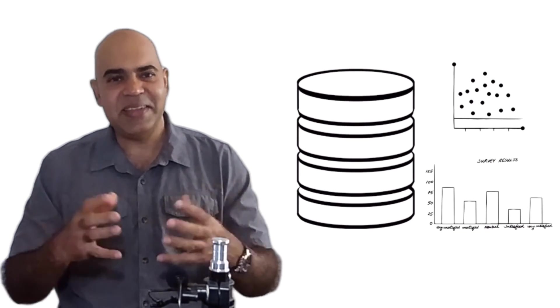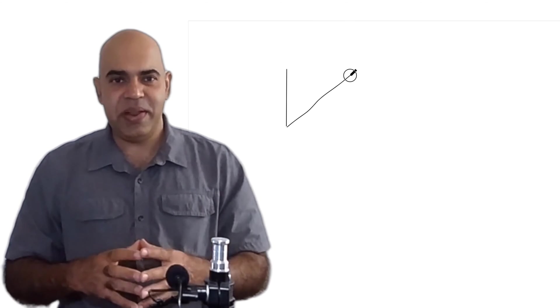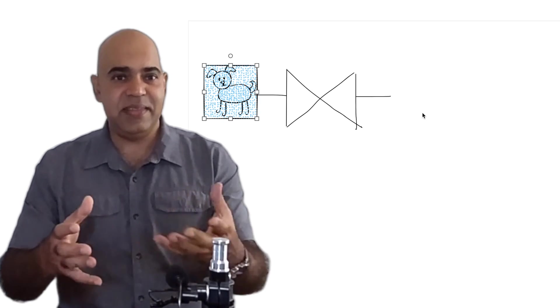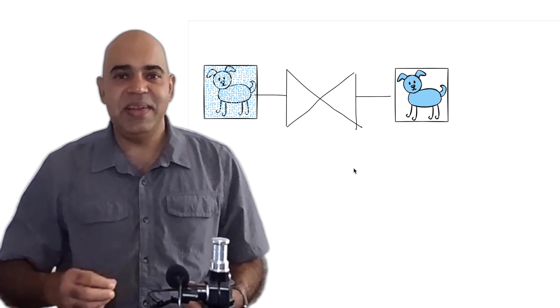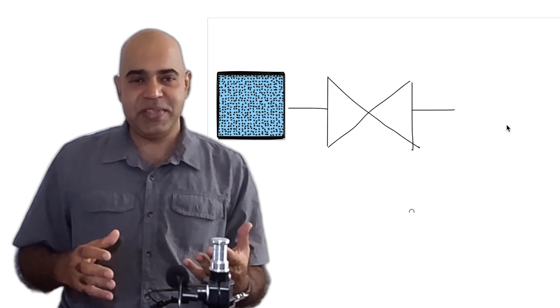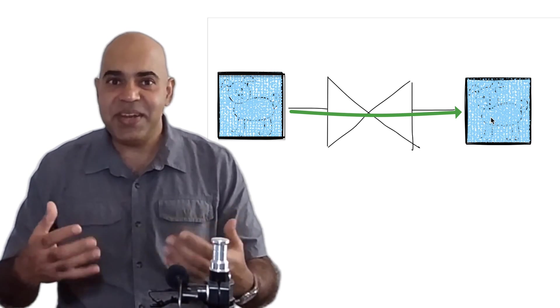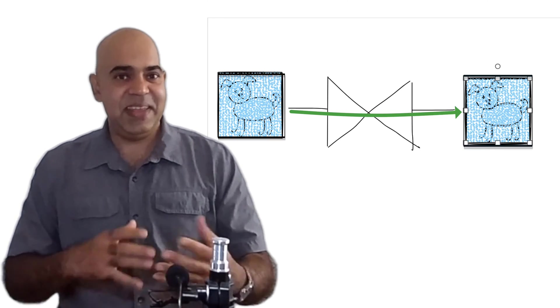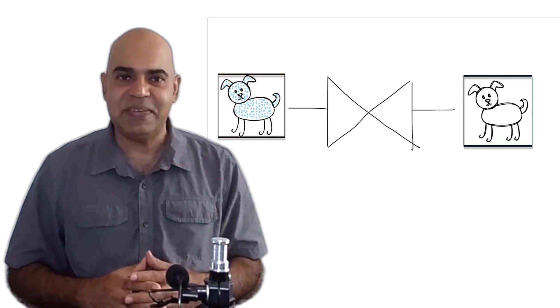The central idea behind diffusion models is the concept of a random walk through the data space. Starting from a noise sample, we train a neural network that, given noisy data in the input, can provide denoised data in the output. In other words, the neural network knows how to denoise the data. In the final stage of the process, from complete noise we iteratively denoise noisy data, generating better and better data in each iteration. But how do we train the neural network so that it can denoise data?